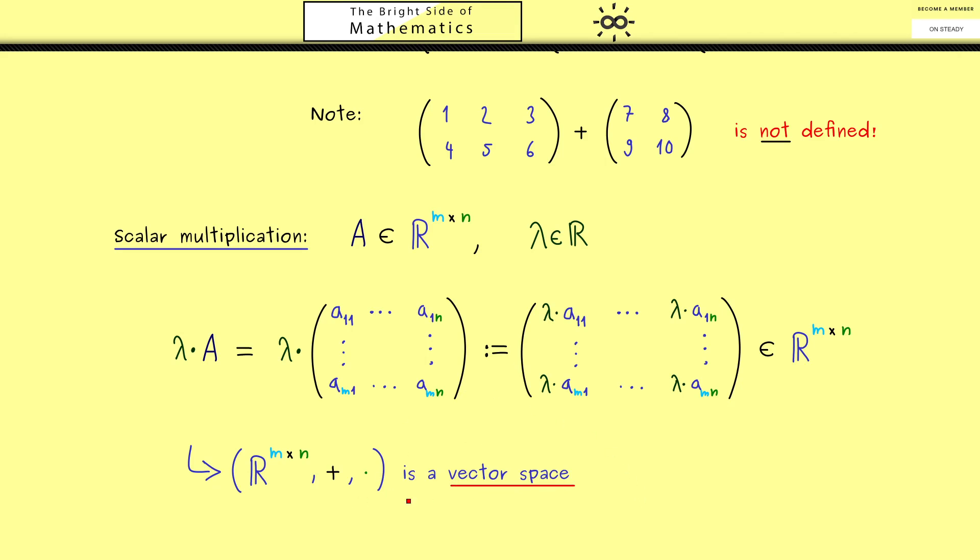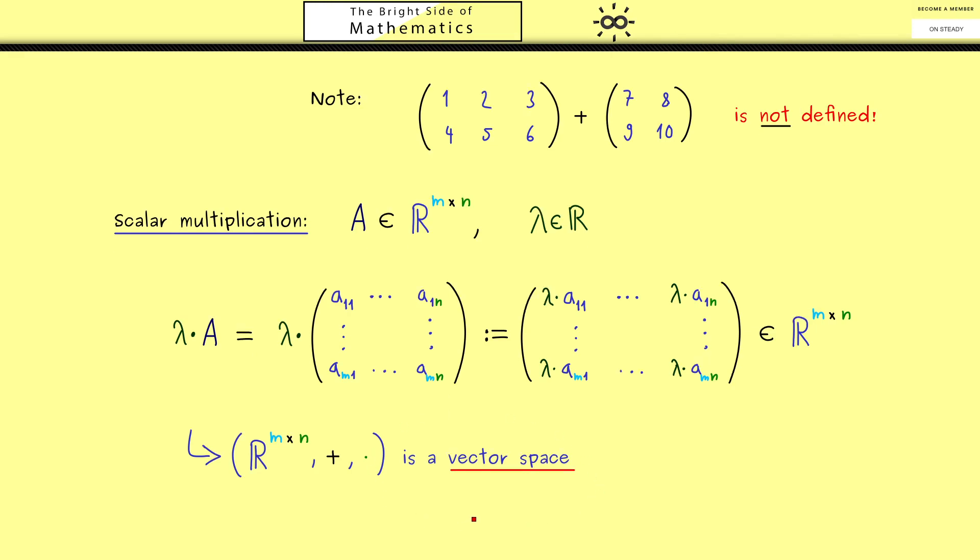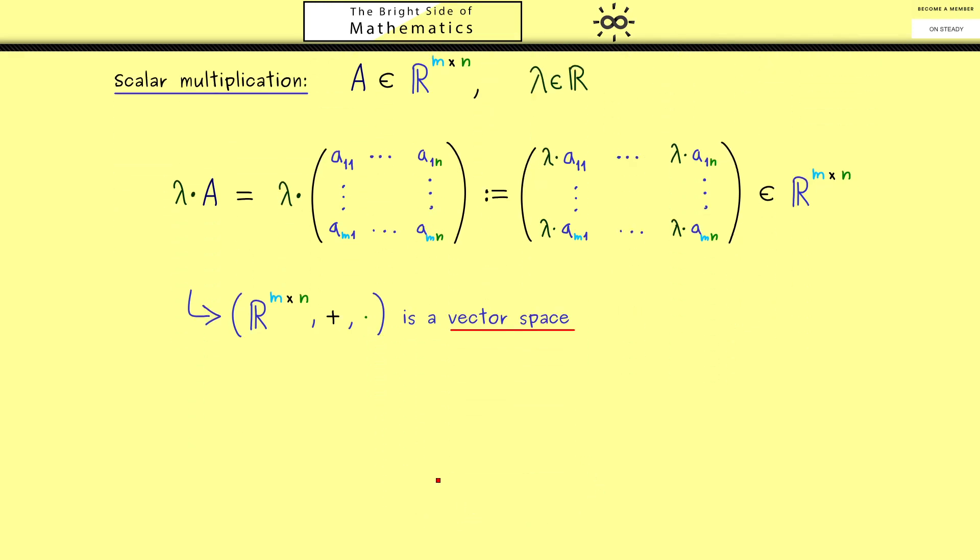And of course you already know what this means. It means that a lot of calculation properties are satisfied. And just for the sake of completeness I will show you all of these properties again.